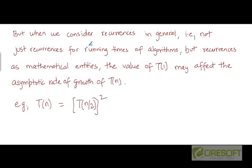But if we look at recurrences in general — that is, if we focus on recurrences as mathematical entities in themselves, not just recurrences corresponding to the running times of actual algorithms — it's possible to construct an artificial recurrence equation where the initial condition, or base case, or the value of T(1) may end up affecting the asymptotic complexity of T(n). Here is one example: T(n) = [T(n/2)]².